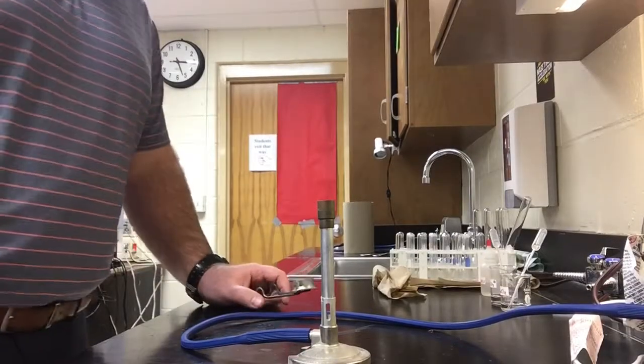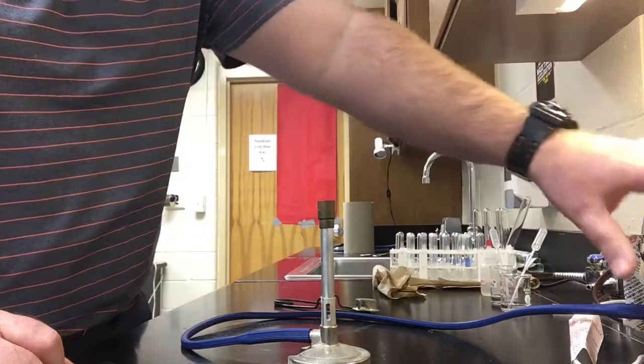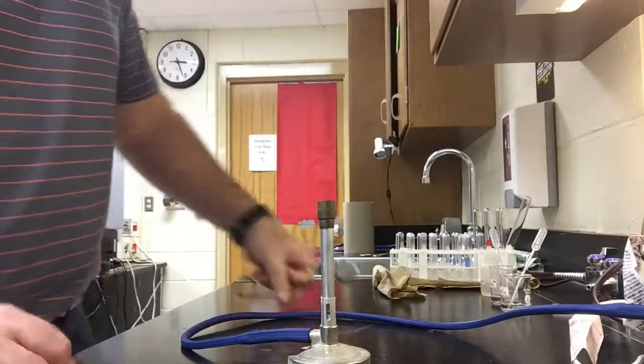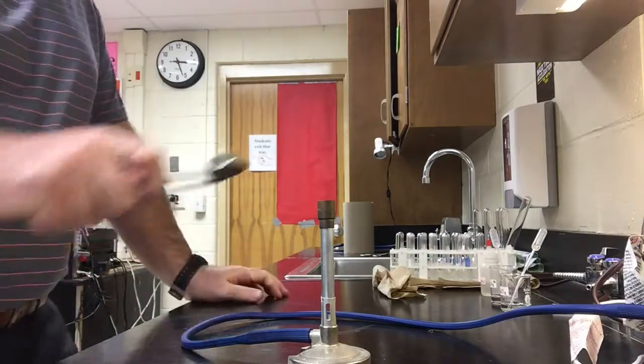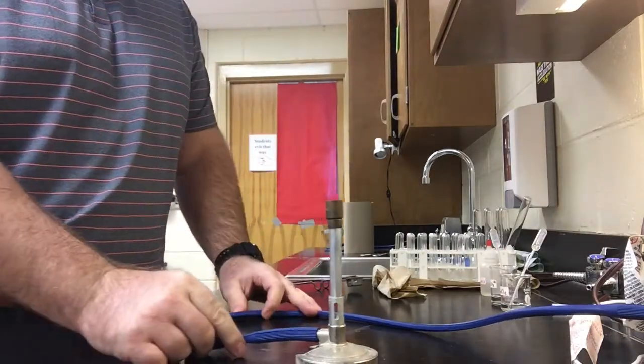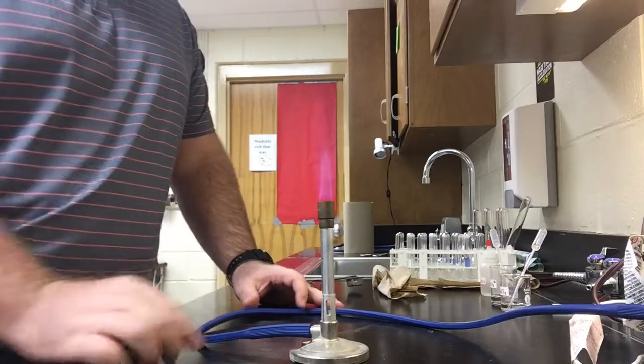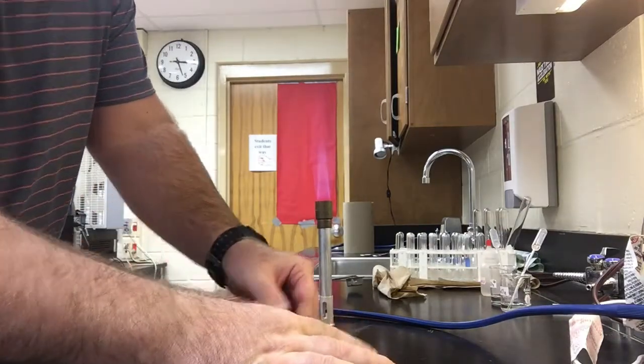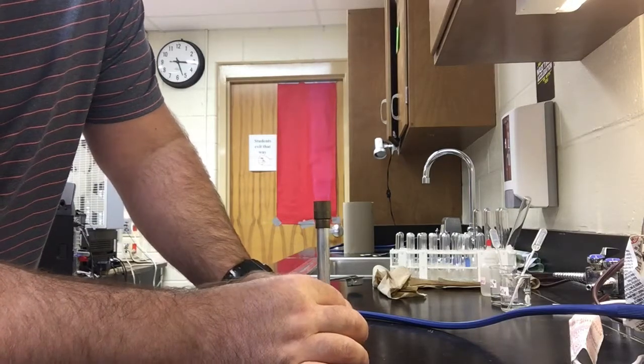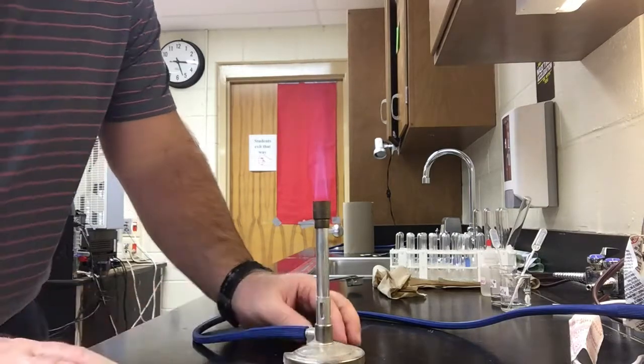All right, so today we're going to take a look at our types of chemical reactions lab. I'm going to start by turning on the gas to get the Bunsen burner going. All right, so as you can see the Bunsen burner is lit. You adjust the flames ever so slightly. All right, looks good.